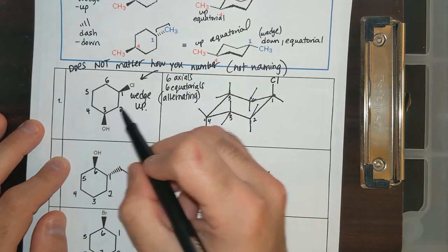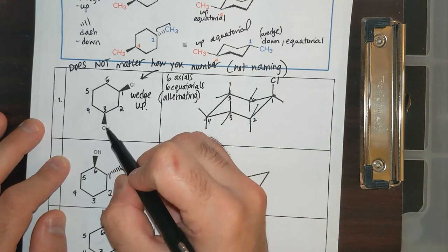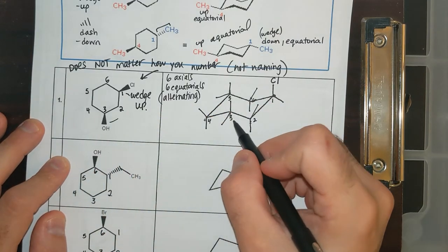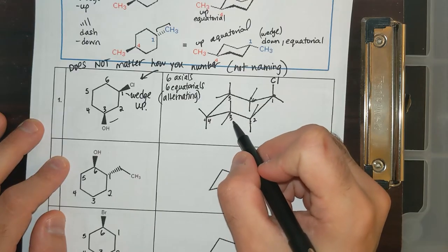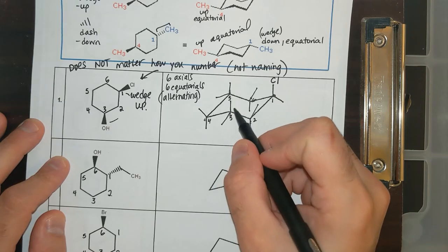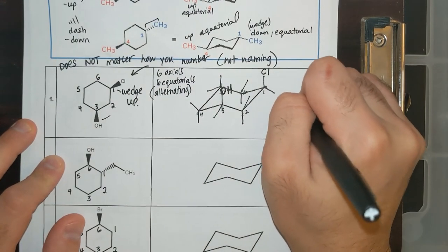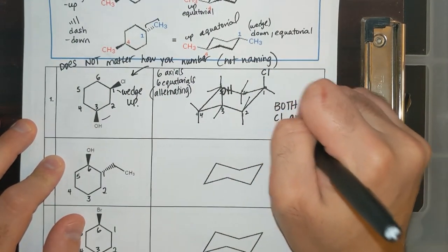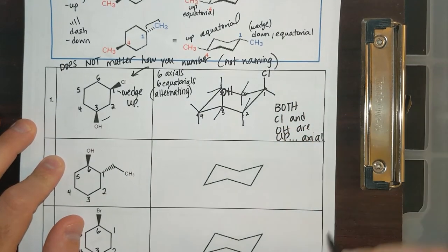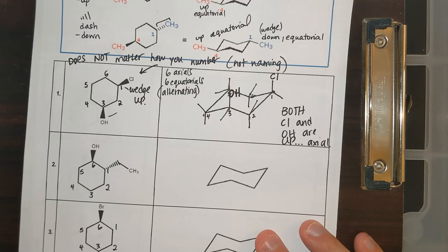Then going to carbon three — this OH is also up, it's a wedge. So I go over to three and ask which one is up. The equatorial is down on the third position, so OH is going to be put up and axial. Both CL and OH are up axial. As long as you are consistent — if you change numbering on different carbons, you'd still be consistent.